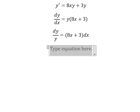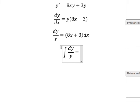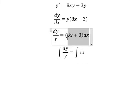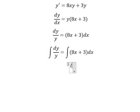Next, we put the integration on both sides. The integration of dy over y gives us ln of the absolute value of y.